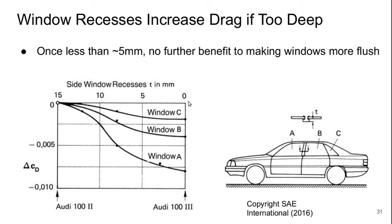Another thing, although this one is a fairly small effect, is the window recesses. There's typically some recess between the metallic frame around the window and the window itself. If this recess is too deep it can increase drag. However, if it's less than five millimeters or so, it doesn't really matter and it doesn't help to make it more flush. You can see that once the recess is less than five millimeters, things flatten out.